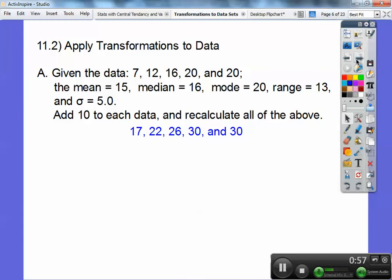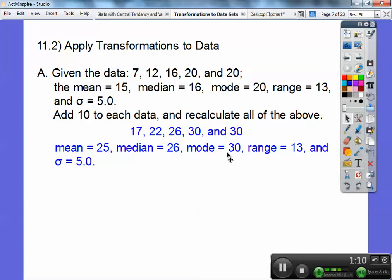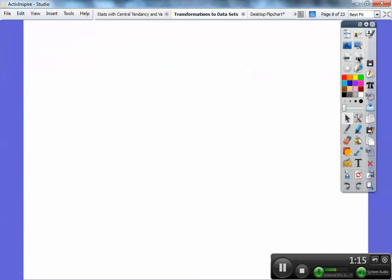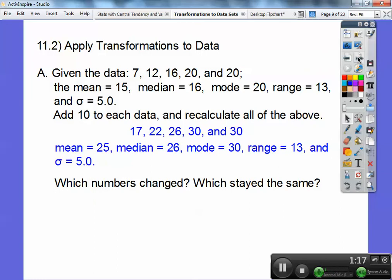Okay, so I'm going to recalculate the mean. So the mean is add them all up and divide by 5 again. So the mean became 25, the median became 26, the mode became 30, the range is 13, and the standard deviation is 5. Okay, so what I want you to recognize, whoops, I lost a page there, which numbers changed and which numbers stayed the same. So let's take a look.